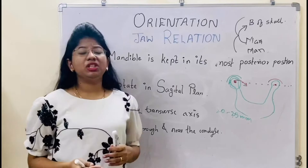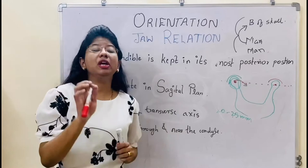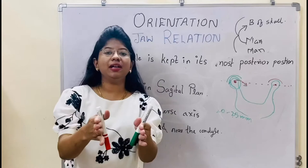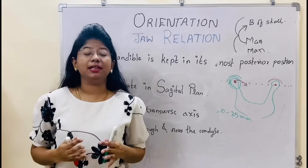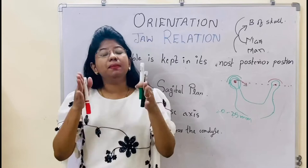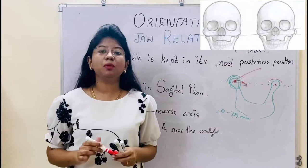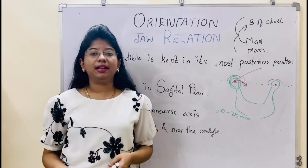Now we will see why it is important to record this relation — the relationship of the maxilla to the cranium. Why it is important? Because your maxilla can have different tilts. Like if patient A has a 10 degree tilt, patient B has 20 degrees, and patient C has 30 degrees. Each and every patient has different anatomy and that's why they have different tilts. If you do not record the tilt of the maxilla properly — that is, the angulation of the maxilla to the base of the cranium — the relation of the maxilla to the mandible will also get affected, and eventually your occlusal plane will get affected.